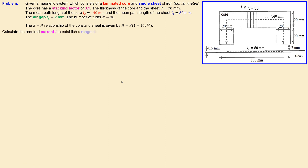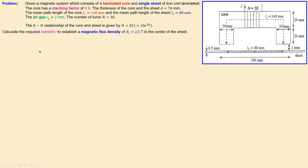The question we need to answer is: calculate the required current I that must be injected to establish a magnetic flux density of 2.5 tesla in the center of the sheet. So at the center of the sheet we need 2.5 tesla, and finding the required current is the task.